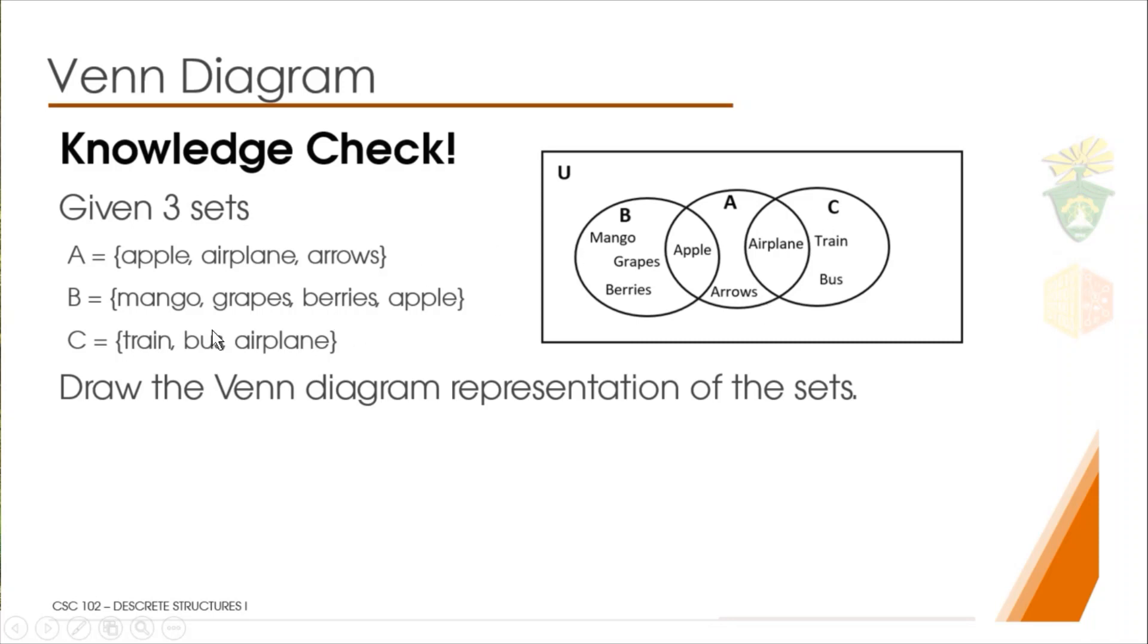Here we see that the arrows is not in the overlap. The third set, we see that its common element from A is the airplane, so we write it in the overlap. And outside of the overlap we write the train and bus, since these two elements are not present in the other sets. If you got this correct, then congratulations you have learned what I've expected. If you got it wrong, it's just a matter of practice.